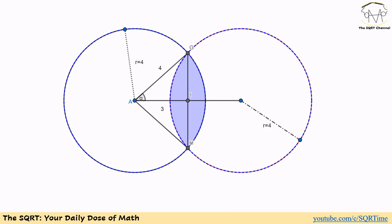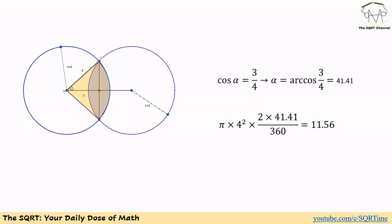We are going to work with triangle AGI. We claim this triangle is a right triangle. The reason is that in triangle AGH, we have AG equal to AH, and AI divides GH into two equal parts, so AI is the height of triangle AGH. Based on that, cosine of alpha equals 3 over 4, so alpha is roughly 41.41 degrees.